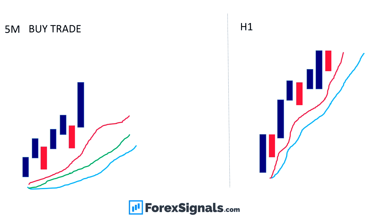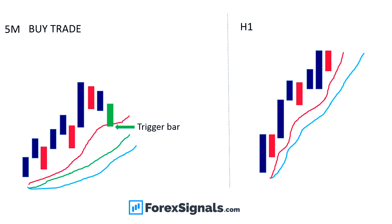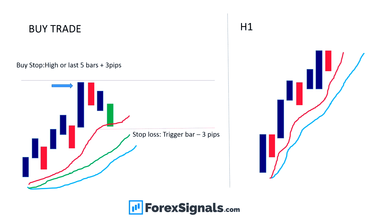Once we've confirmed the direction of the trend — here on the one-hour we're looking for buy trades only, price is nicely above the moving averages — we drill down to the five-minute chart. We're looking to see the 8, the 13, and the 21 moving average all nicely fanning out in the direction of the higher timeframe trend. Here they're fanning out to the upside and price is moving up nicely. When price comes back down and touches the 8 EMA, this is our trigger bar. We count back five candles, find the local swing high — the highest high of those five candles — and place a buy stop three pips above that candle.